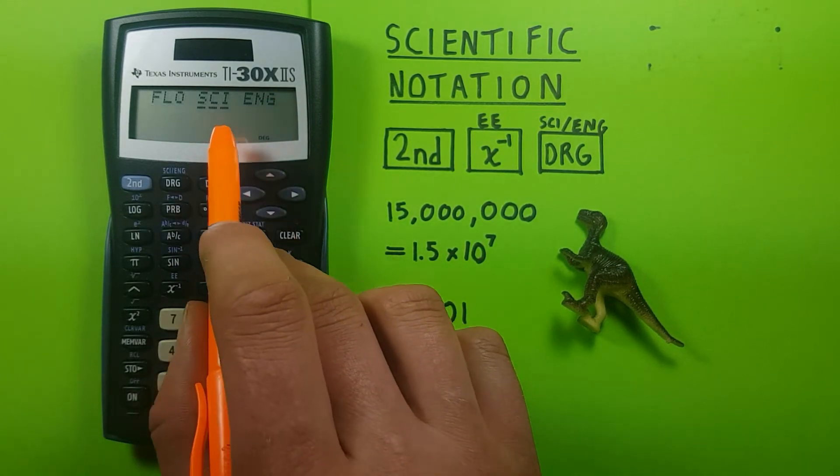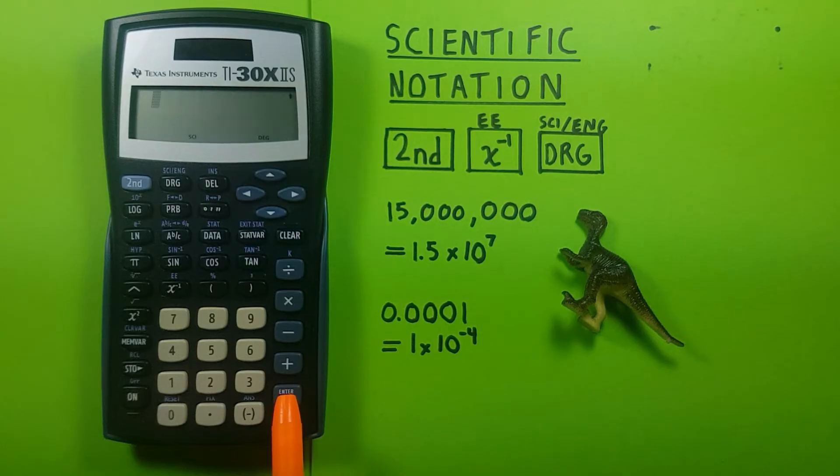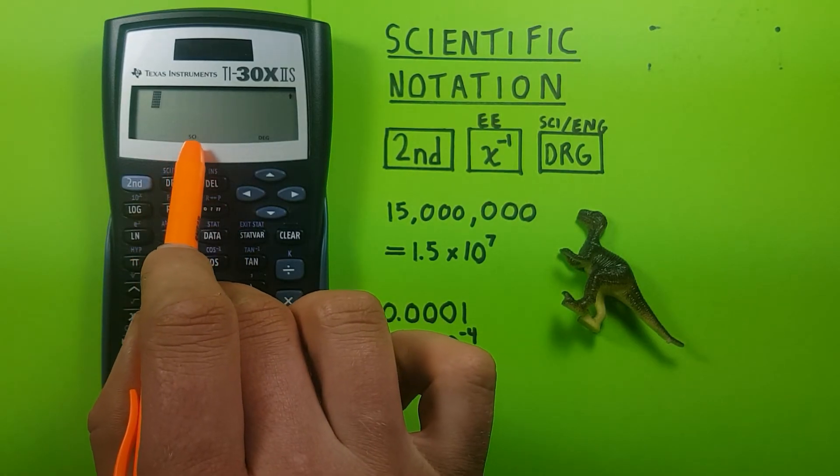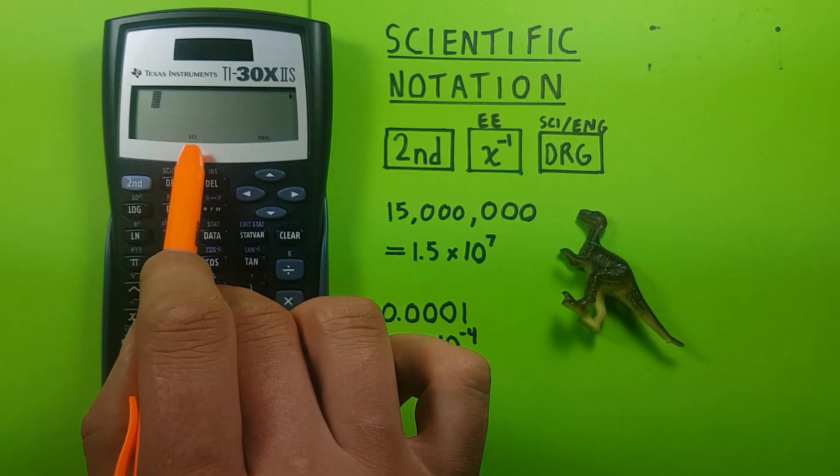So one to the right, highlight SCI, and hit enter. You can see SCI at the very bottom of the screen here now, telling us we're in scientific notation mode.